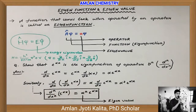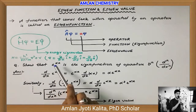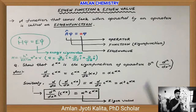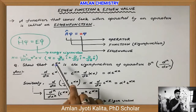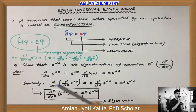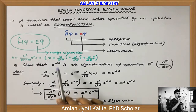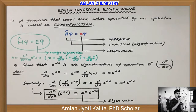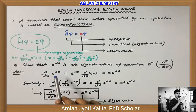Chaliye ek numerical example ke zariye isko samajhne ki koshish karte hain. Question mein diya gaya hai: e^(αx) is the eigenfunction of operator D^n, i.e., d^n/dx^n. Iska matlab, e^(αx) ko agar aap n times differentiate karte hain, toh jo function nikalega kya woh eigenfunction hoga? Iske baare mein haamko ab pata karna hai.